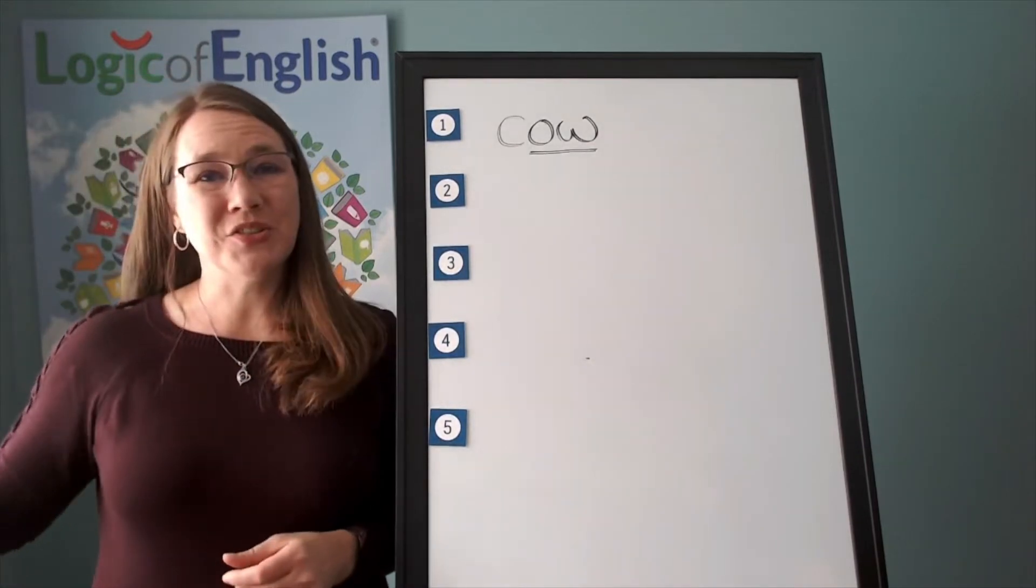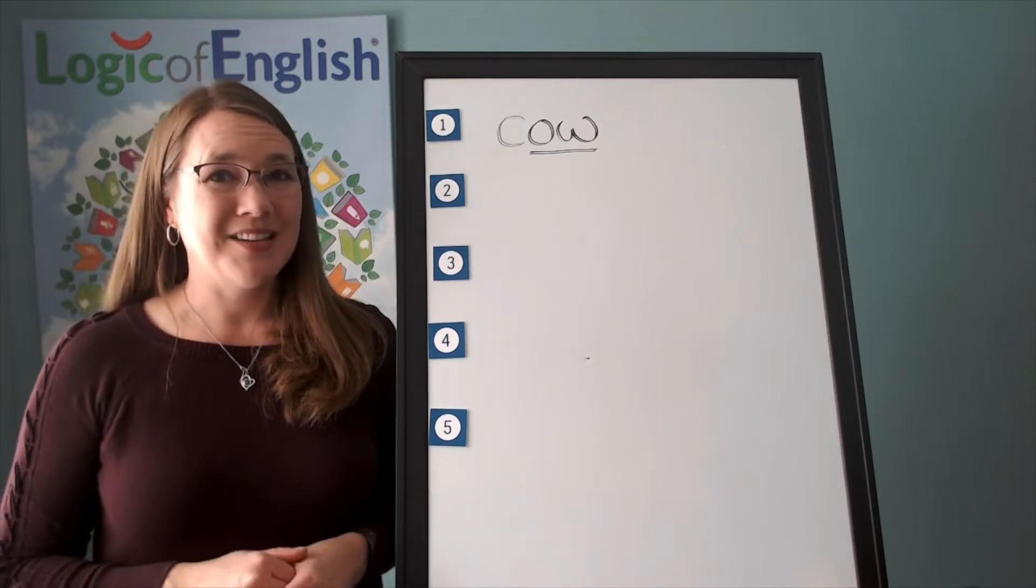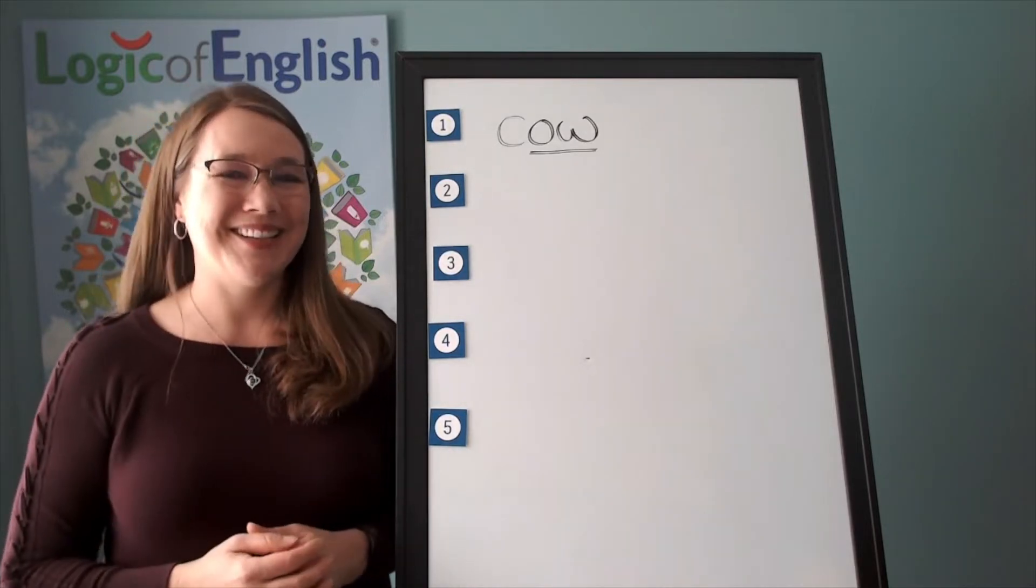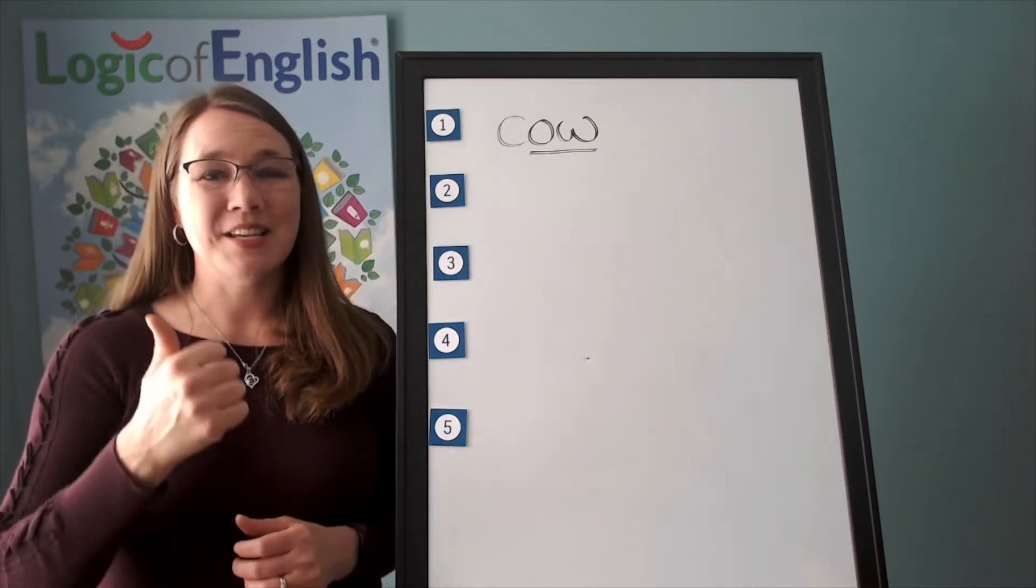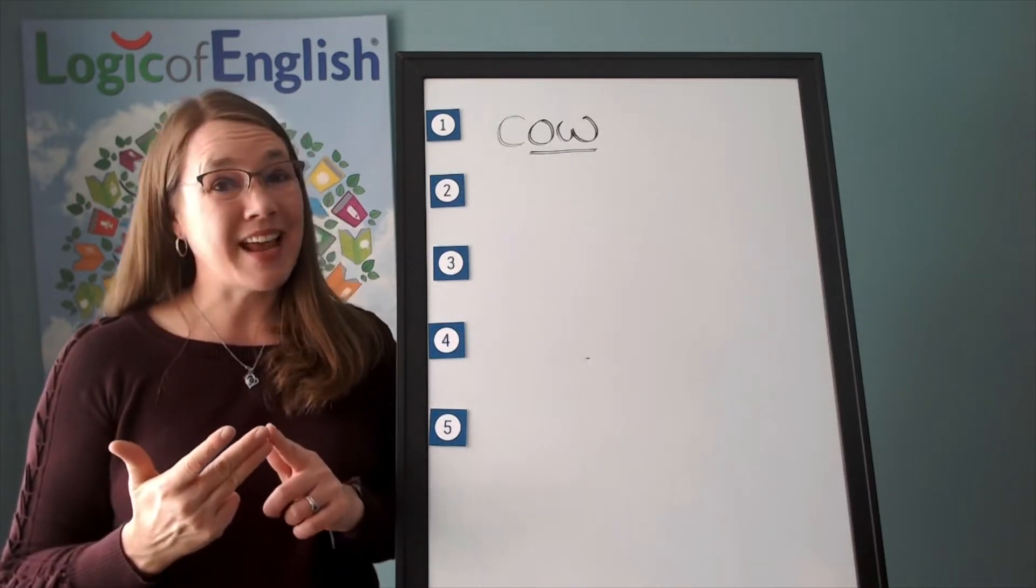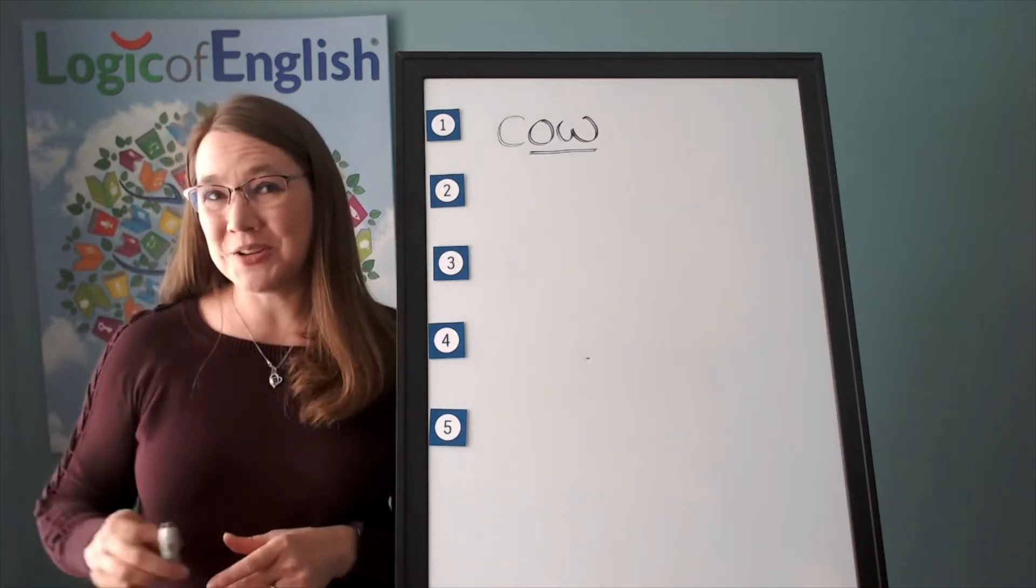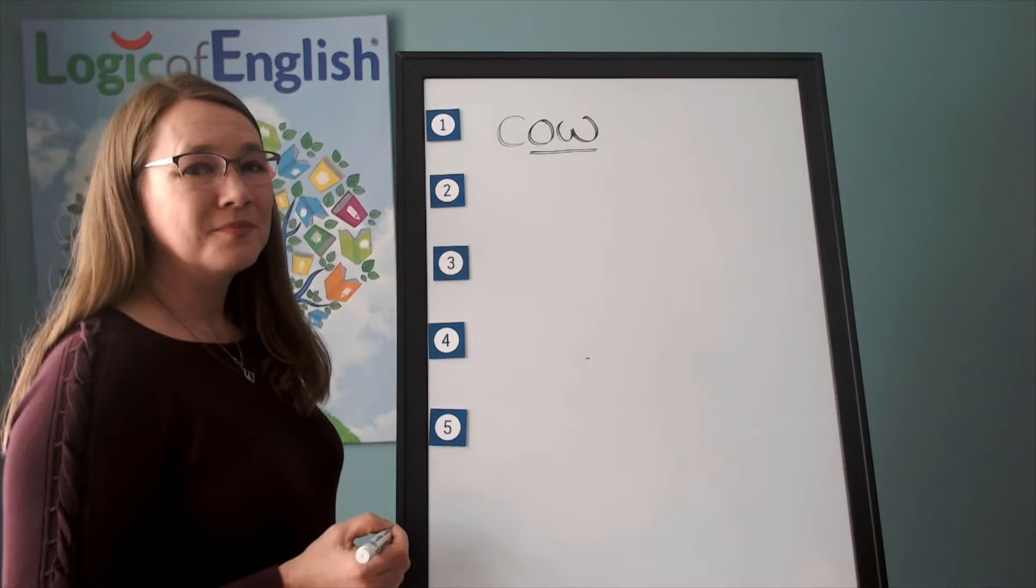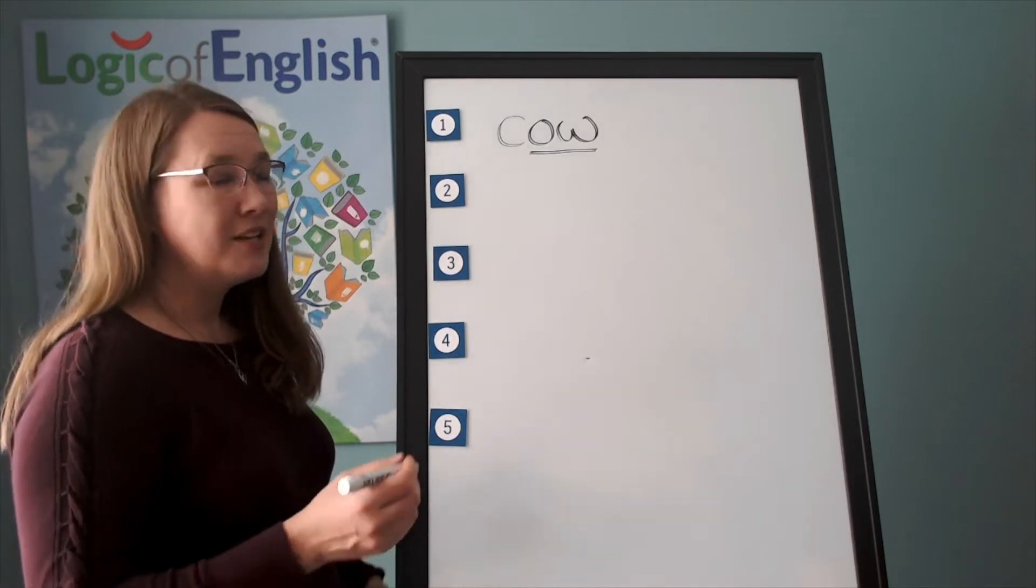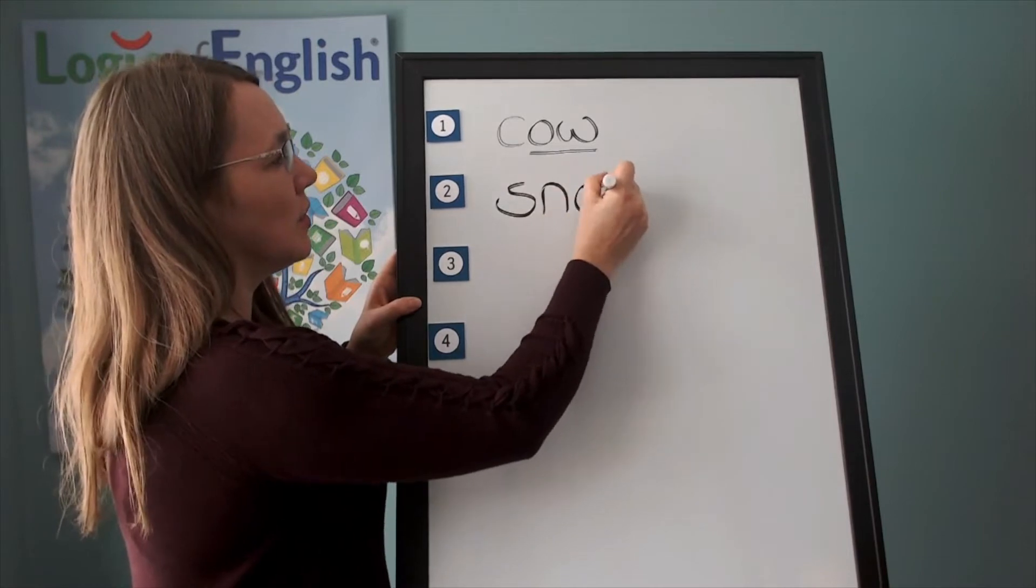The next word is snow. There is snow on the ground outside. Snow. Go ahead and say snow. Let's sound it out. S-n-o. This is an ow-o. Got it? Go ahead and write snow. Good. Help me to write it. S-n-o.